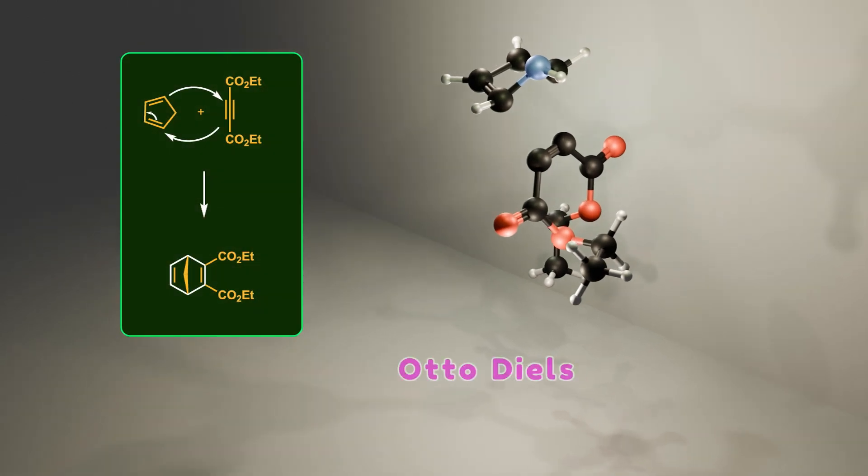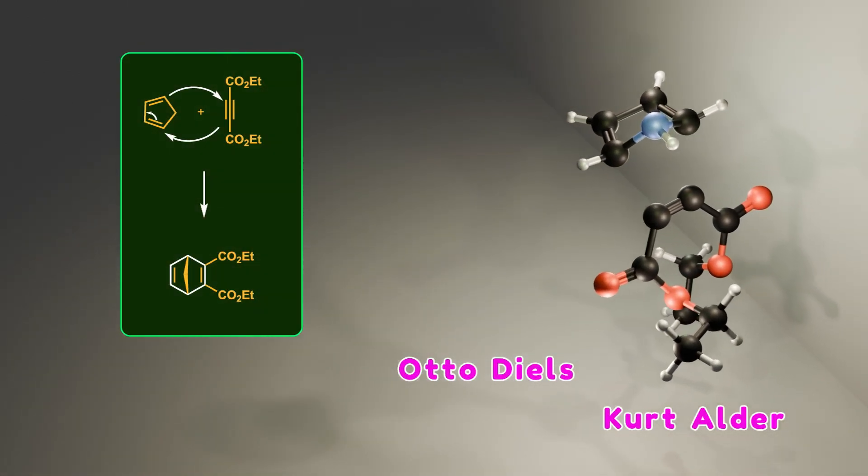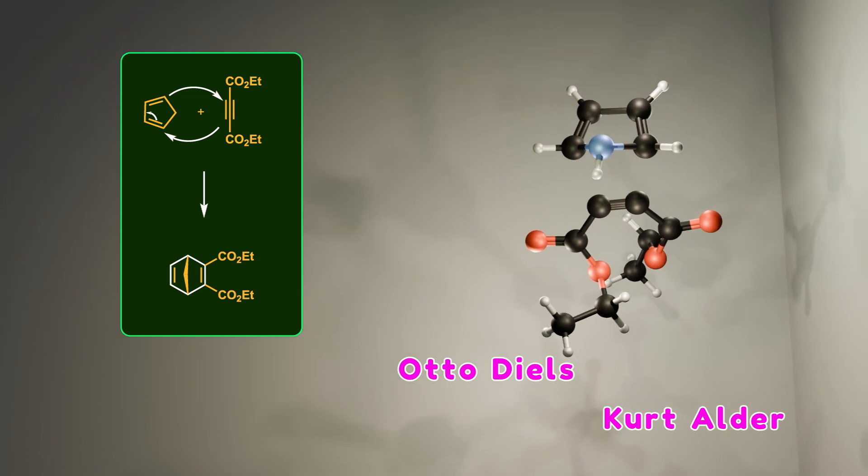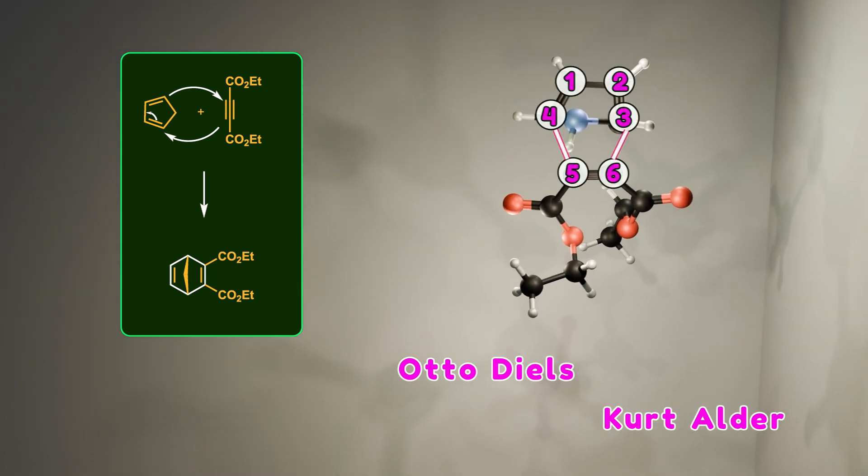In 1928, Otto Diels and Kurt Alder introduced a powerful strategy for constructing two carbon-carbon bonds at the same time while forming a six-membered ring. For this groundbreaking discovery, they were awarded the Nobel Prize in chemistry in 1950.